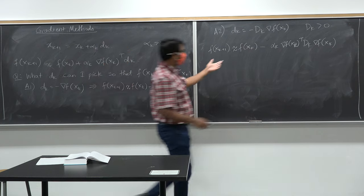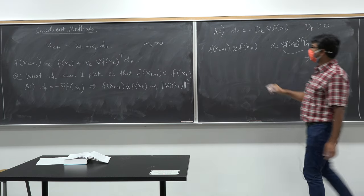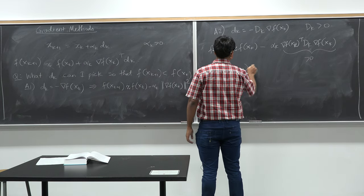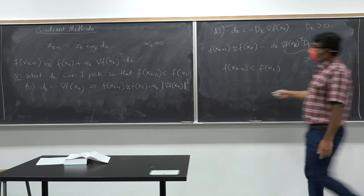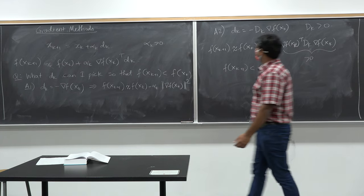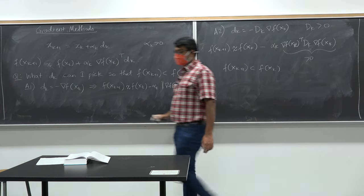With α_k positive and the update using a positive definite matrix D_k, f(x_{k+1}) will be lower than f(x_k) for small values of α_k as long as x_k is not optimal. In the next class we will look into different ways of picking α_k and d_k to always minimize the function, and study the convergence properties of gradient descent algorithms.